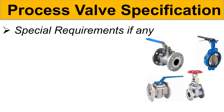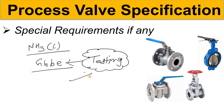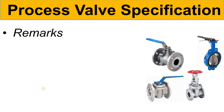If there are any special requirements for any type of valve, those can also be given in the Process Valve Specification. For example, if you are handling liquid ammonia and using a globe valve and want specific testing before purchasing, you can write that in the special requirements section. Any technical requirements with respect to process needs can be noted there. Similarly, any remarks regarding size, MOC, or service fluid can be given in the remarks section.